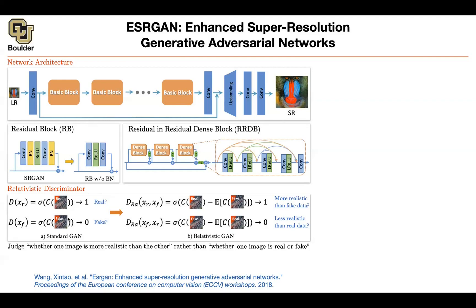For the relativistic discriminator, you compare a real image to a batch of fake images in your mini-batch, and the discriminator answers the question: is this image more realistic than the fake ones? This way, as the generator gets better and better, the discriminator needs to work harder. It's like always being graded relative to the class average — you always need to be above average, so if the class improves, you improve too. This idea of a baseline we also saw in reinforcement learning.